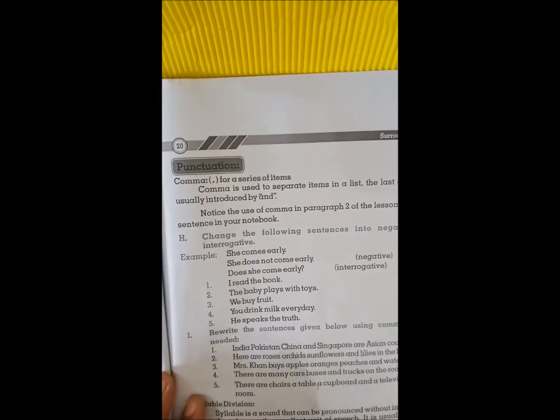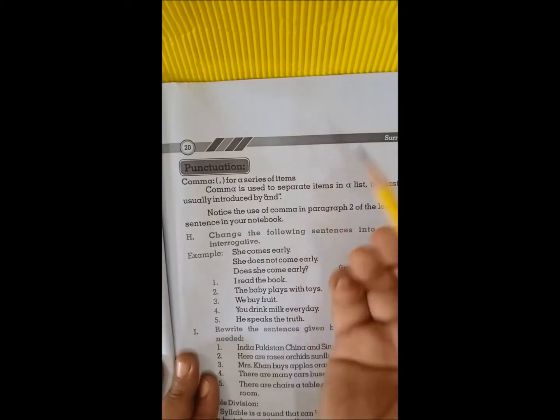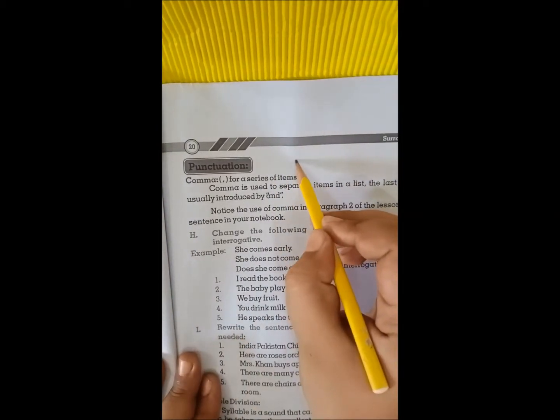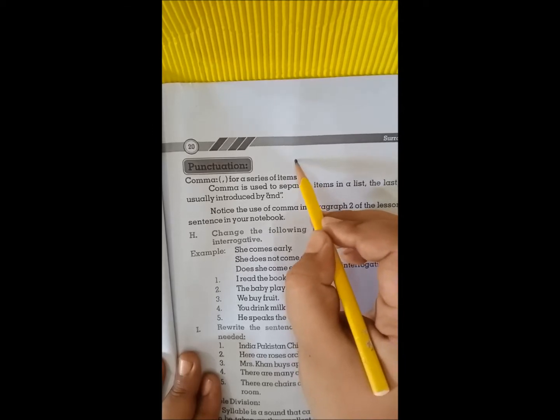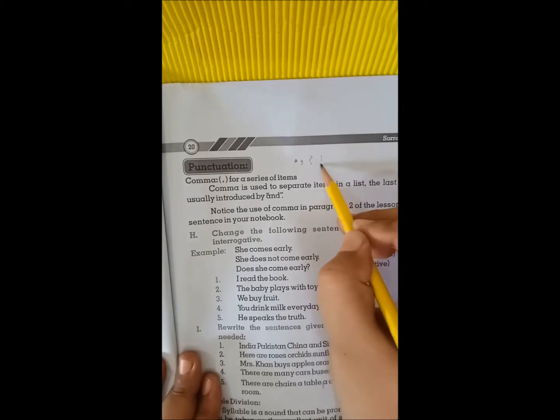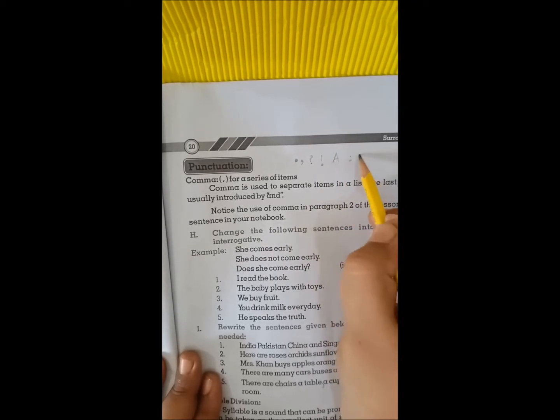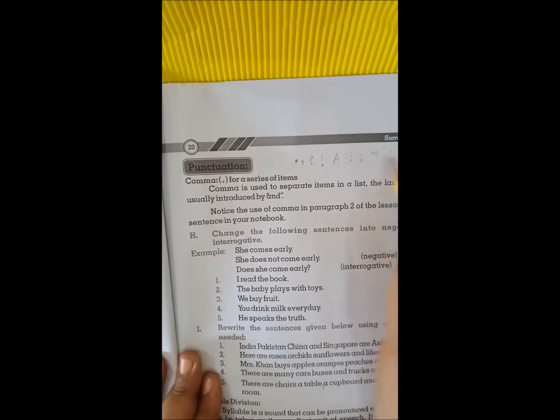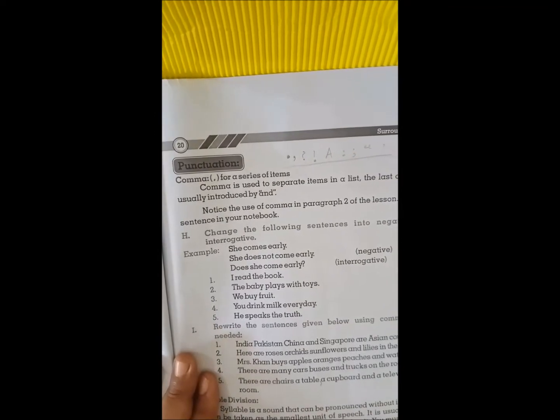Punctuation. What is punctuation? There are some signs that we call them punctuation: full stop, comma, question mark, exclamation mark, capital letters, colons, semicolons, inverted commas. These are some signs that we use in our speech and writing.